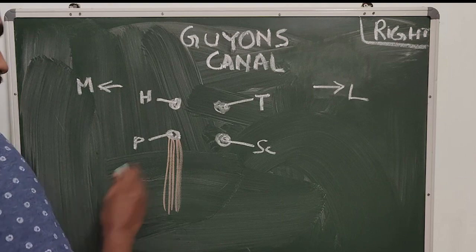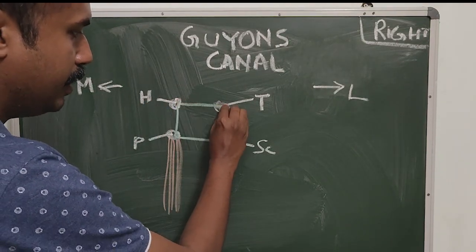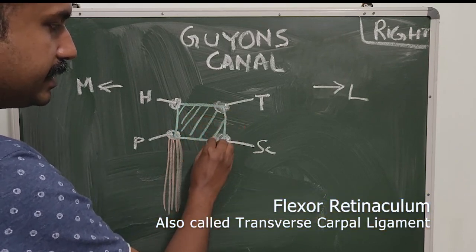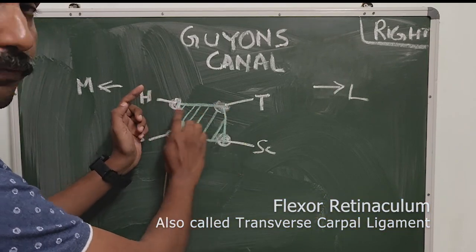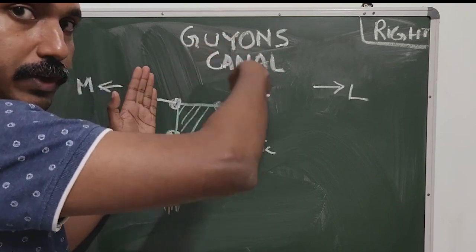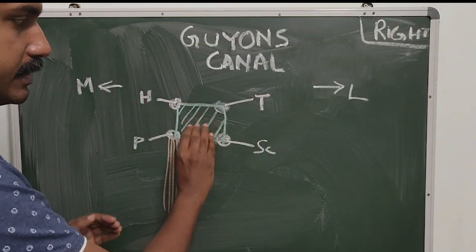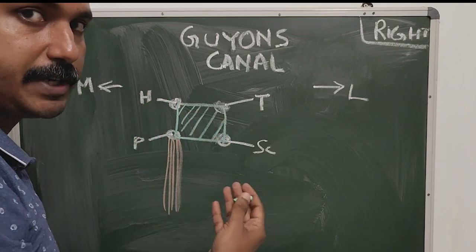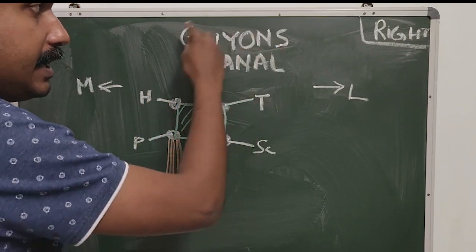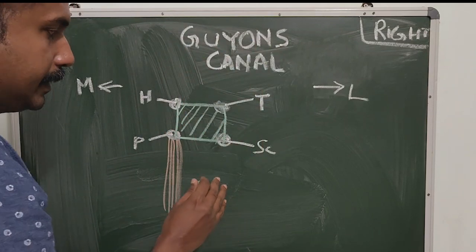Bridging these four bony points you have what is known as the flexor retinaculum. The flexor retinaculum bridges these four bones, thus converting the carpal groove — which had an anterior concavity — into a carpal tunnel. I mentioned the carpal tunnel because the Guyon's canal is different from it; the ulnar nerve and artery are not contents of the carpal tunnel.